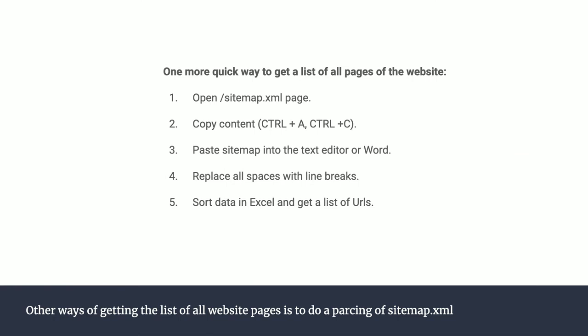Another way of doing similar work is to just go to the sitemap XML — grab the data, parse the file, get the list of all URLs, and then click through them one by one to see what is happening. This is not the most trusted approach because the sitemap XML is configurable — developers can adjust what is shown or not shown on that page. But overall it's a good way to quickly get the list of all pages for a website, especially for projects you've never worked with, to get an idea of the structure.